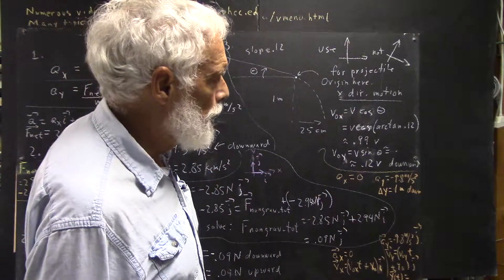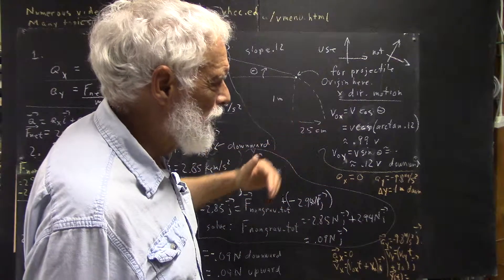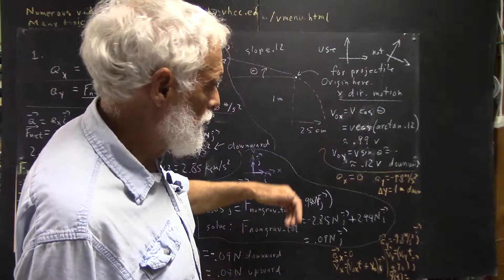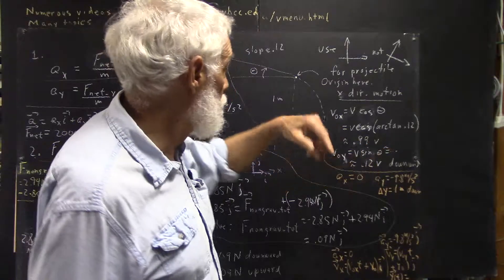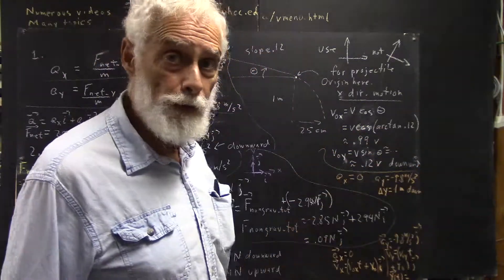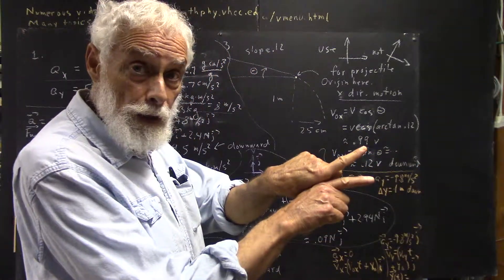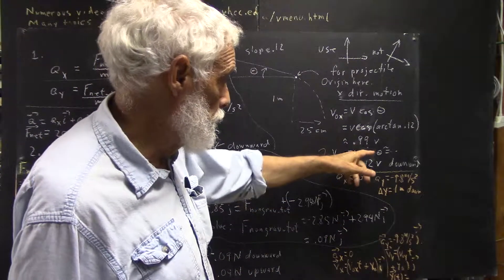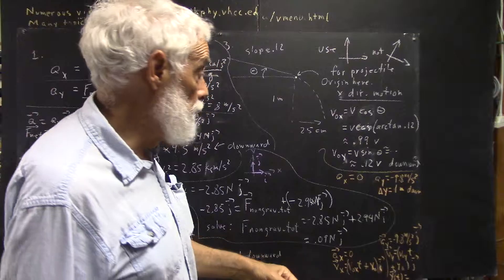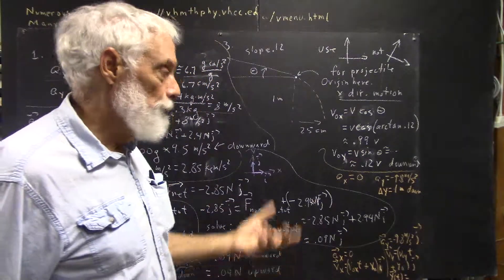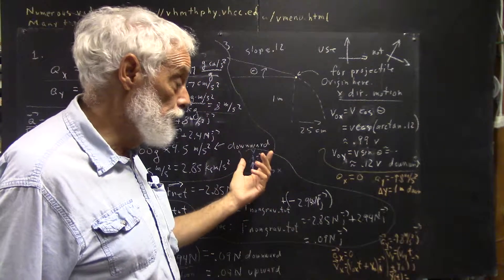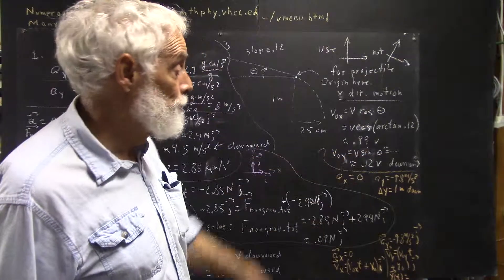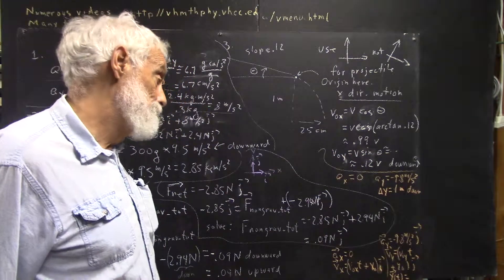You start out by saying your initial x velocity is v cosine theta. You don't really need to find the angle explicitly — you can find the cosine of the arctangent of 0.12 using simple pre-calculus techniques, without finding the angle first and then finding its cosine.